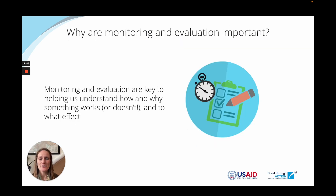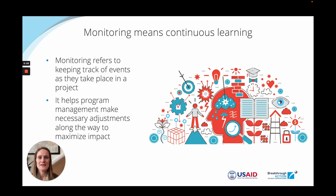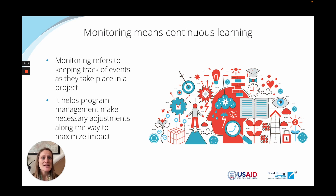Why are monitoring and evaluation important? Monitoring and evaluation are key to helping us understand the how and the why of whether something works or doesn't, and to what effect. When we're talking about monitoring, we're referring to continuous learning — monitoring is not only about indicators, but really about keeping track of events as they take place in a project. By monitoring outputs and estimating coverage, you're able to see whether programs are being implemented as planned, if they are achieving what they're intended to, and what necessary adjustments are needed to maximize impact.